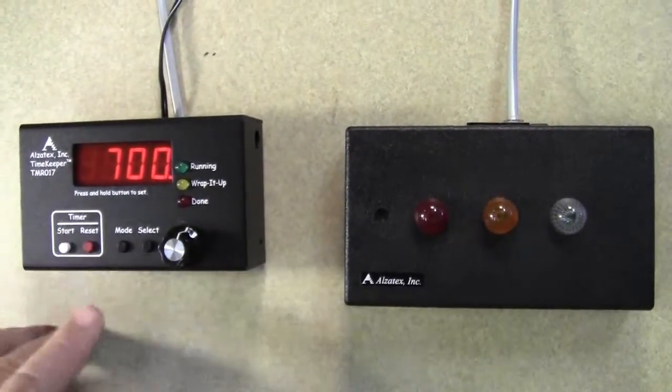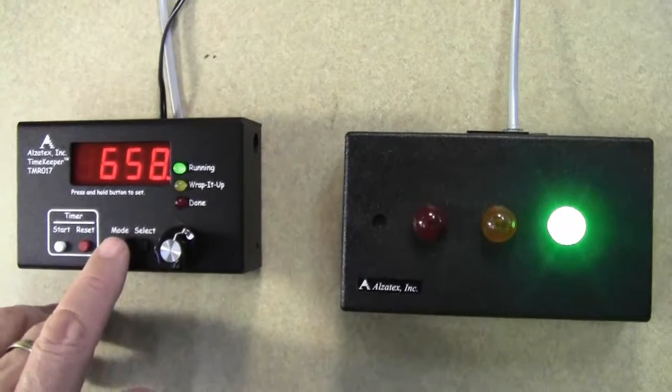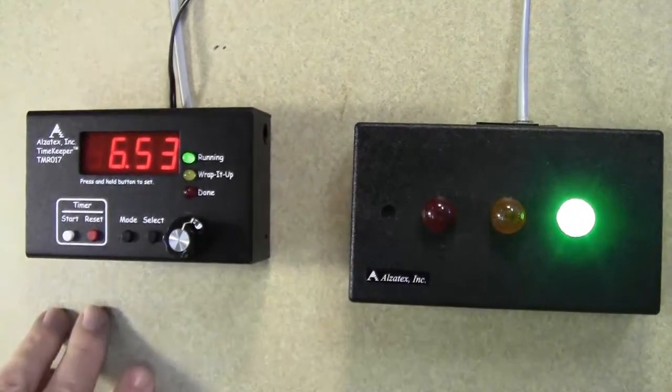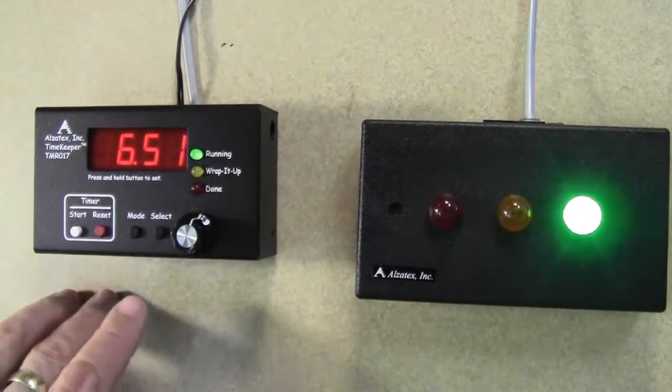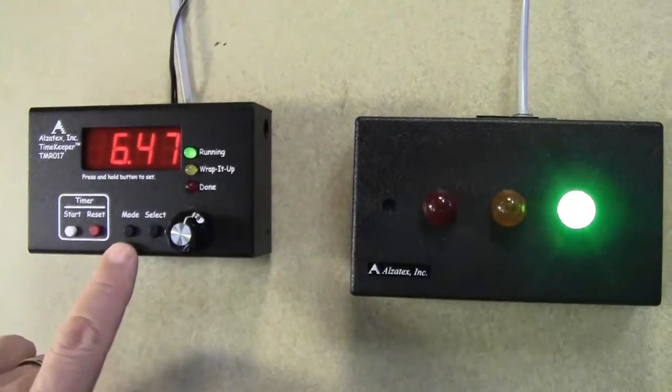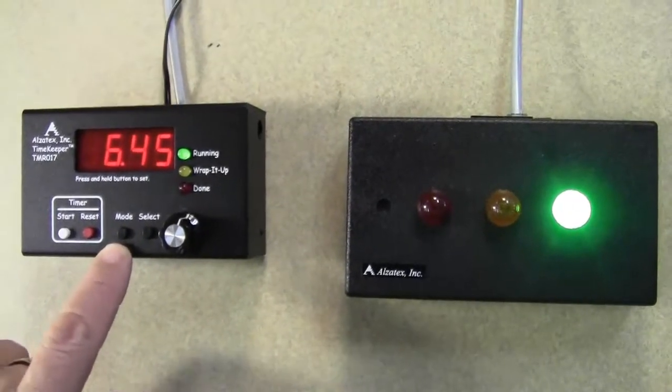Now I'm going to press start, and we'll press the mode button. This shows elapsed time. Press the mode button again. This shows time remaining. So it doesn't affect the green, yellow, red light, but it does show whether you're looking at elapsed time or time remaining.